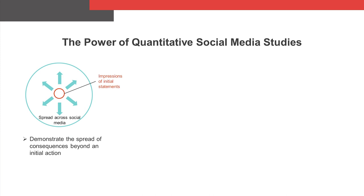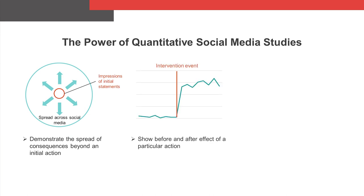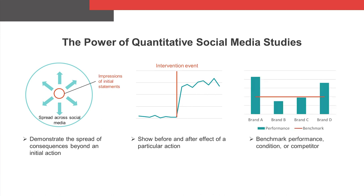These types of analyses are also effective tools for linking a particular outcome to a particular party's action. For example, one might show the evolution of consumer discussion following the launch of a controversial new marketing campaign. They also make it possible to put an event or action in context by comparing it to a benchmark performance, condition, or competitor. This can be an especially useful tool for defendants in IP matters who are looking to contextualize instances of consumer confusion put forth by the plaintiffs.